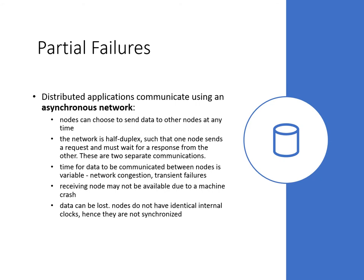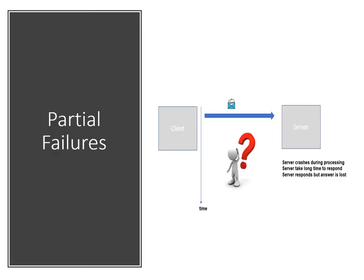The network is half-duplex such that one node sends a request and must wait for a response from the other — these are two separate communications. The time for data to be communicated between nodes is variable due to reasons like network congestion and transient network connection failures. The receiving node may or may not be available due to a machine crash. Data can be lost; in wireless networks, packets can be corrupted and dropped due to weak signals or interference. Internet routers are allowed to drop packets during congestion, and nodes do not have identical internal clocks and hence are not synchronized.